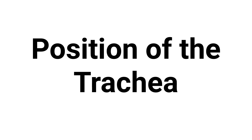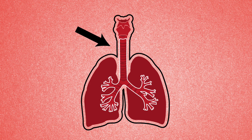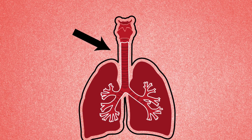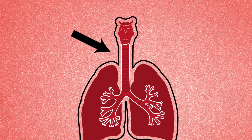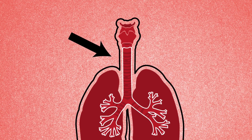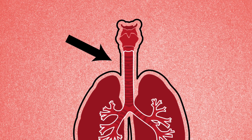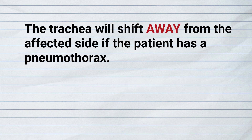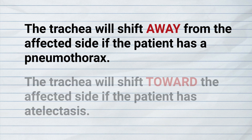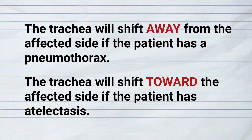The next tip concerns the position of the trachea. You will want to assess the patient's tracheal position in order to identify atelectasis or a pneumothorax. Remember, the trachea will shift away from the affected side if the patient has a pneumothorax, and the trachea will shift towards the affected side if the patient has atelectasis.